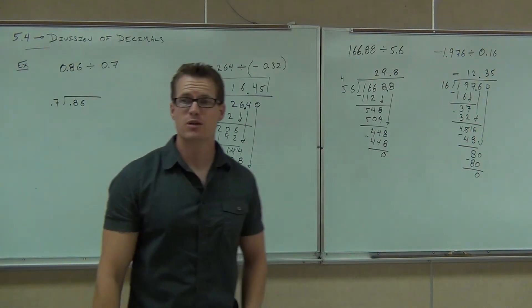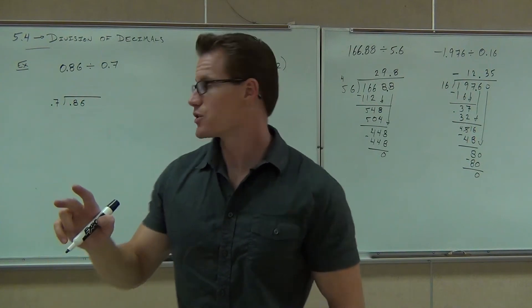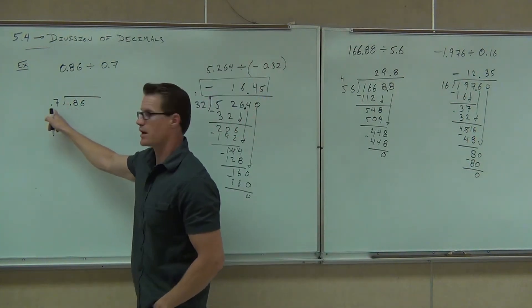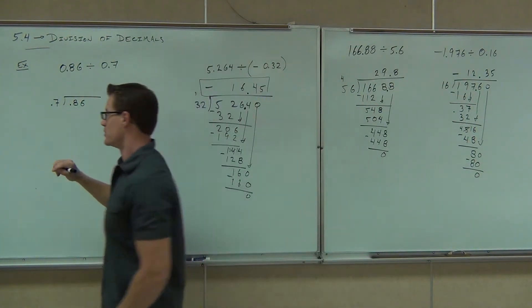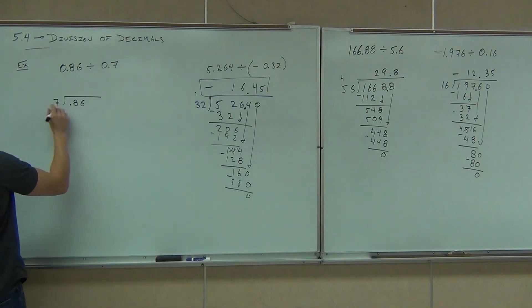And how many places do I need to move the decimal, one or two? One. So I'm not really looking in here, I'm looking out here, and that's dictating how many spaces I move. So one space over means one space over. And of course, I put my decimal on the top of my quotient. Are you guys ready?